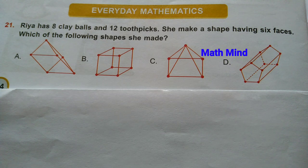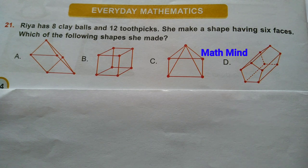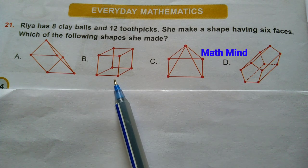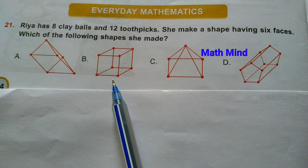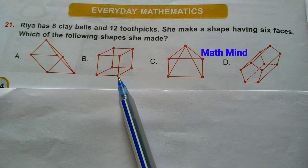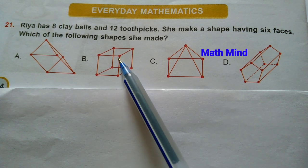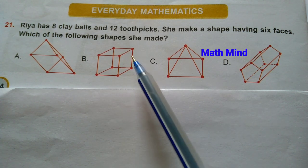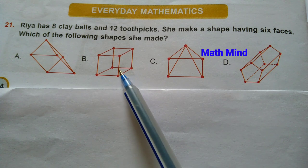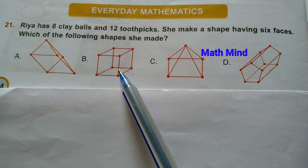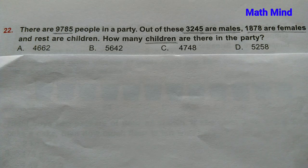Everyday Mathematics, Question number 21: Rhea has 8 clay balls and 12 toothpicks. She makes a shape having 6 faces. Looking at the options, option B is correct — it is a cube. A cube has 6 faces, 12 edges, and 8 vertices. Clay balls are used as vertices and toothpicks are used as edges.